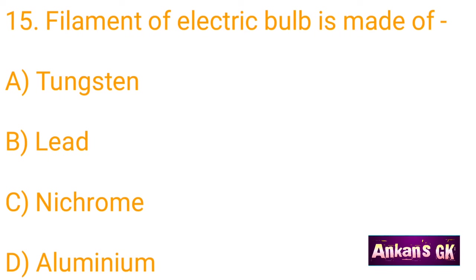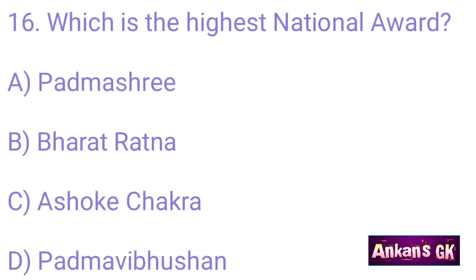Filament of an electric bulb is made of — the answer is A: Tungsten. Which is the highest national award? The answer is B: Bharat Ratna.